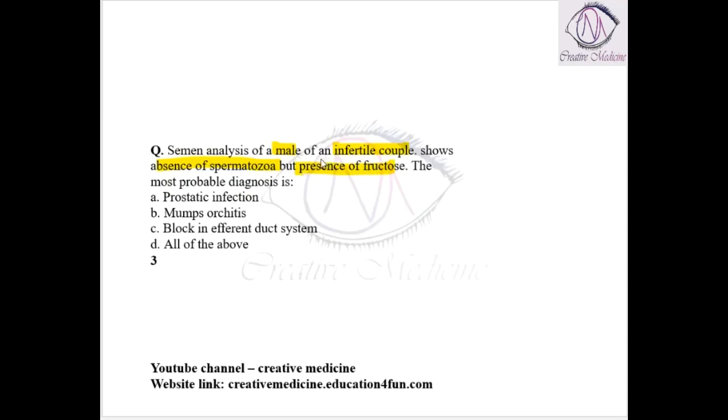This means that there is blockade in the efferent duct system. Even before the sperms have reached the seminal vesicles, there is obstruction. Fructose is produced by seminal vesicles, so there is a block in the efferent duct system.